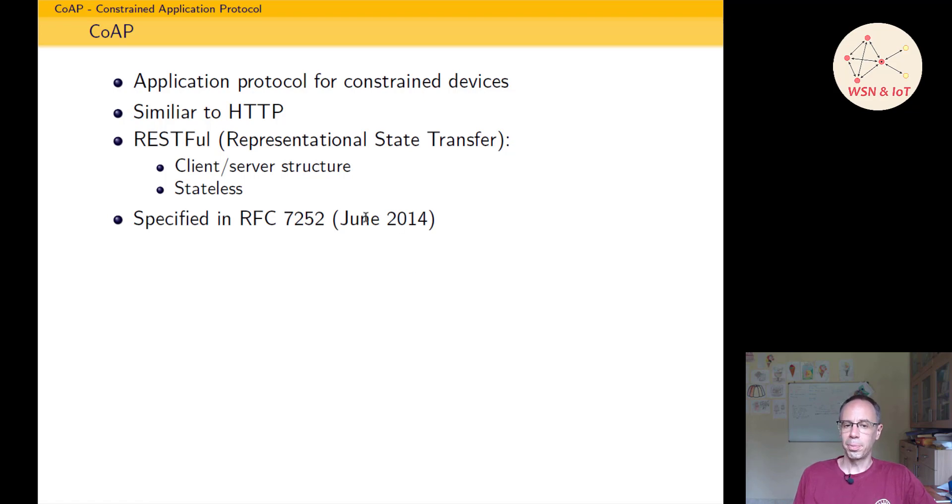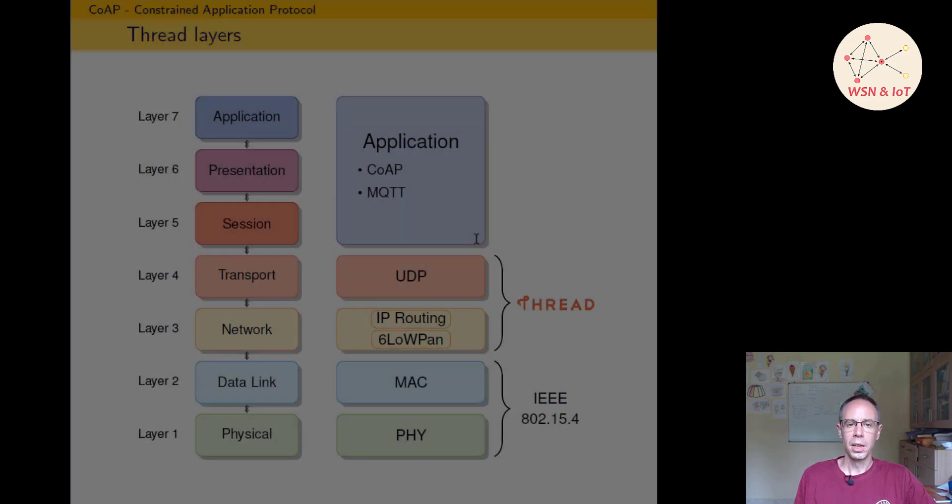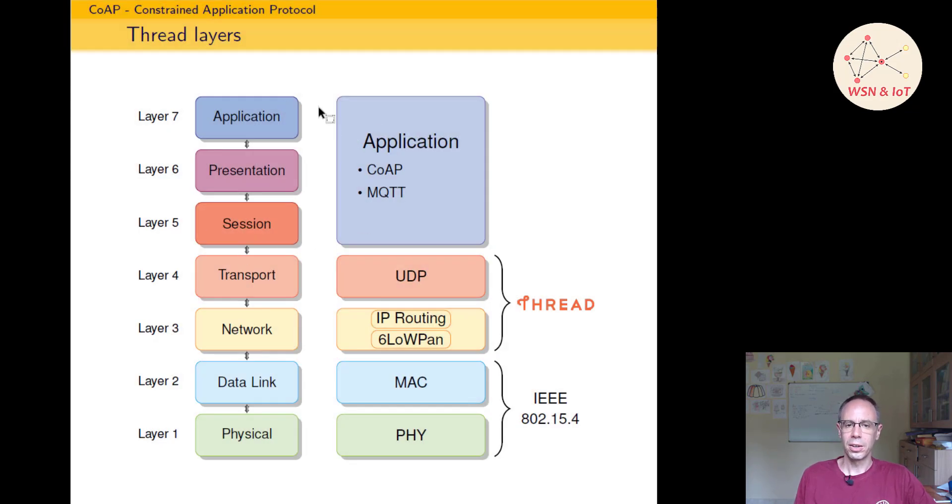When we look at the layers from Thread and the OSI reference model, we see that we're having here Thread—the network layer with 6LoWPAN and IP routing, and the transport layer with UDP. And on the top we're having the application layer where CoAP applies. It doesn't belong directly to Thread, but it's meant to use with it, and in OpenThread it's directly implemented.